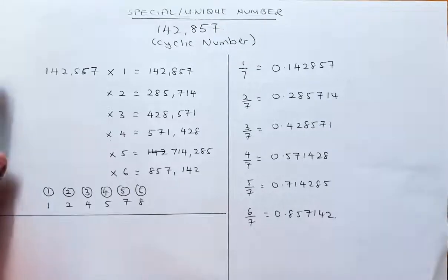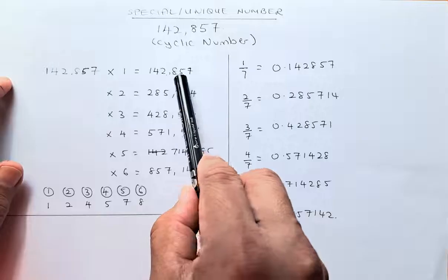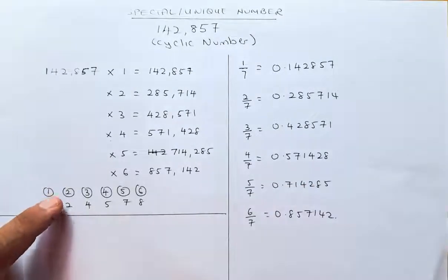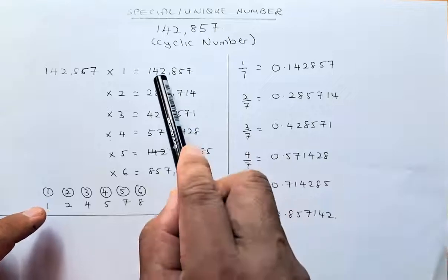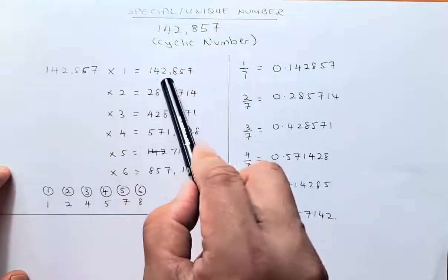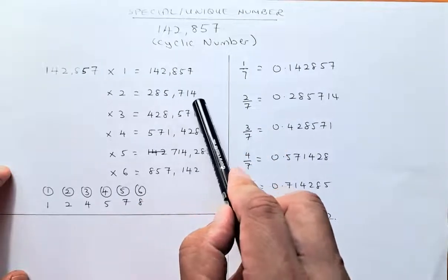When you multiply by 1, you get the same number: 142857. When you multiply by 2, the second digit is 2, so the result starts from 2 and cycles: 285714.